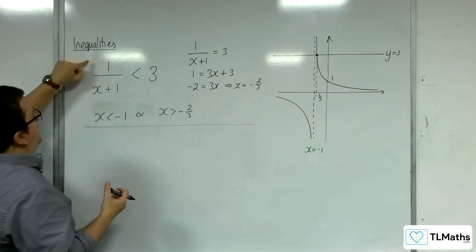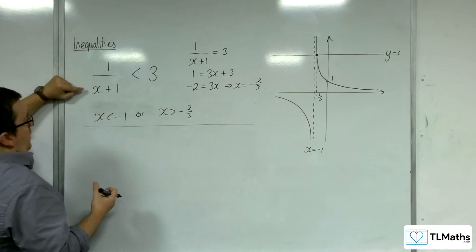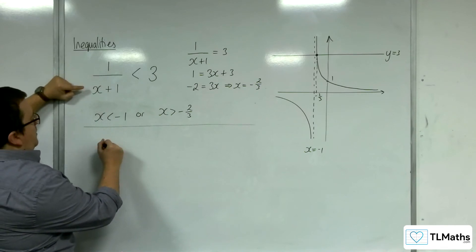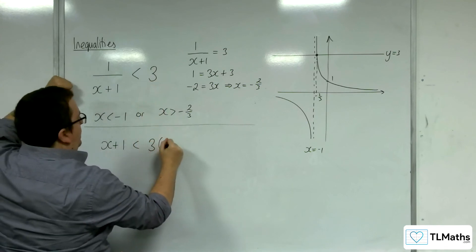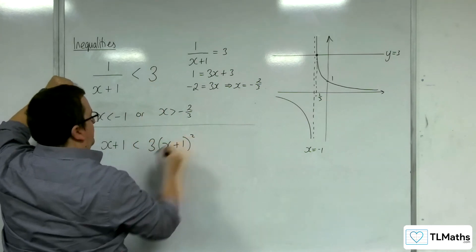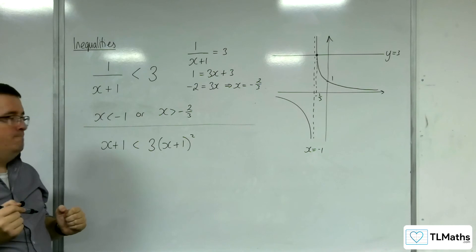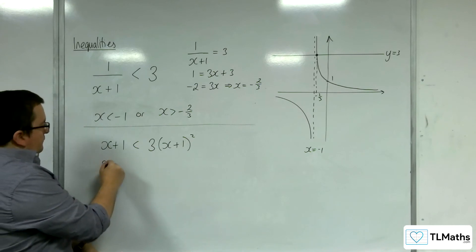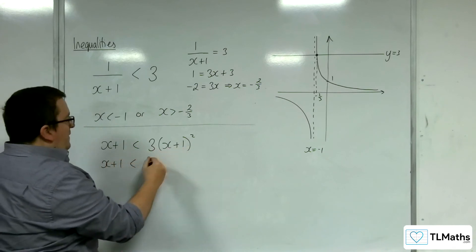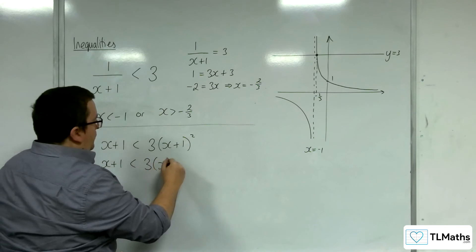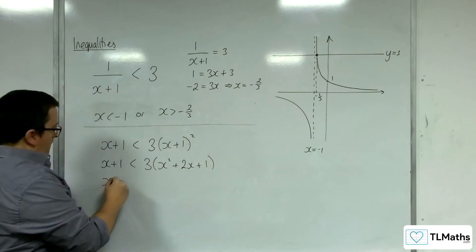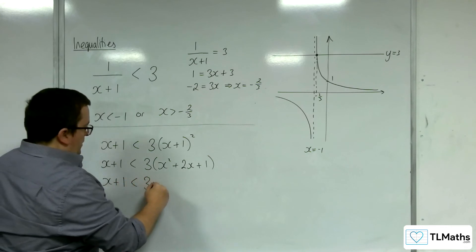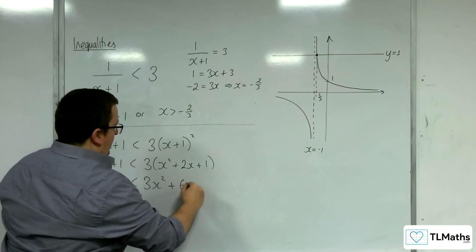Multiplying the left-hand side by x plus 1 squared will just leave me with x plus 1. And multiplying 3 by x plus 1 squared gets me this. Then, I need to expand this out, so I'm going to get 3 lots of x squared plus 2x plus 1.